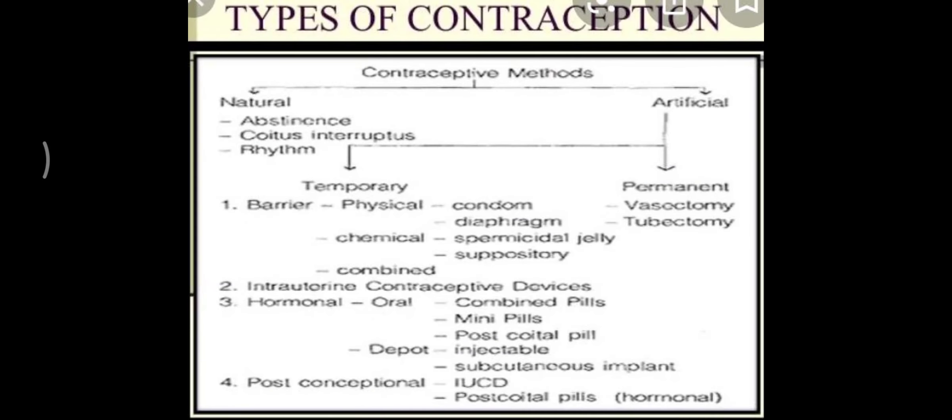The next method is the chemical method, also called the hormonal method. Spermicidal tablets, jellies, creams, and paste are introduced into the vagina and kill the sperms. The common spermicidal chemicals are lactic acid, citric acid, zinc sulfide, and KMnO4 — these kill the male gamete when they enter the female.